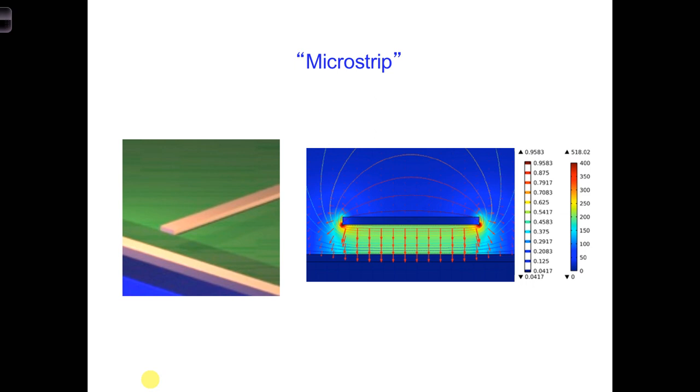We saw the fringing fields on the edges of the transmission line earlier when we looked at the microstrip transmission line shown here. The electric field sprays outwards along the edges of the transmission line.